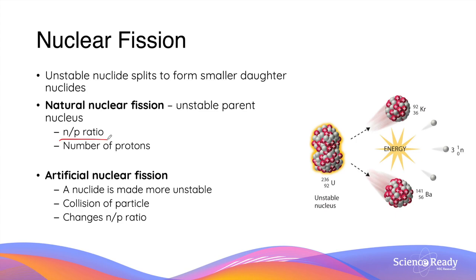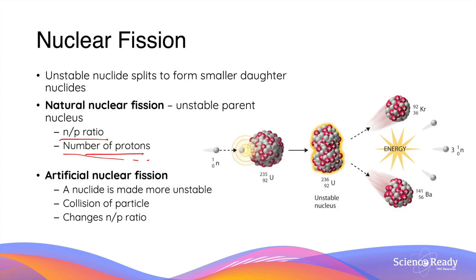You should remember that the neutron-to-proton ratio as well as the number of protons of the nucleus are major determinants of a nuclei's stability. Natural nuclear fission usually occurs for very large nuclei, that is those with a large number of protons. In contrast, in artificial nuclear fission, a nuclei is made more unstable by colliding it with a very high velocity particle such as a neutron. The nuclei's stability changes in this collision because the addition of a new particle such as a neutron will alter the nuclear composition of the nuclei. In this example, the neutron fired at the uranium-235 nucleus temporarily forms uranium-236, which subsequently undergoes nuclear fission to form the daughter nuclei and neutrons.